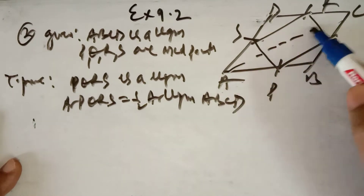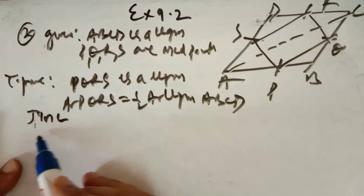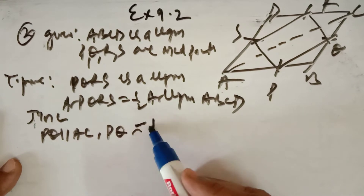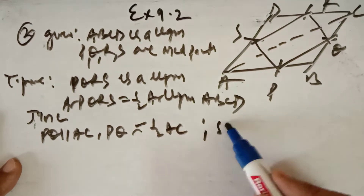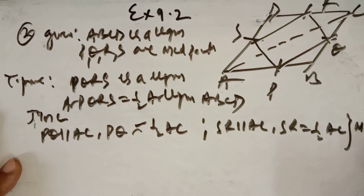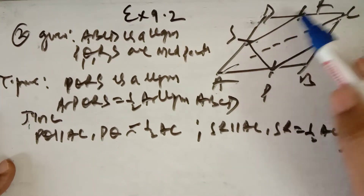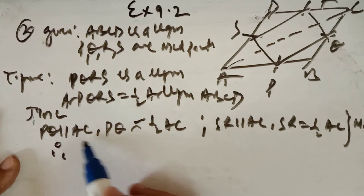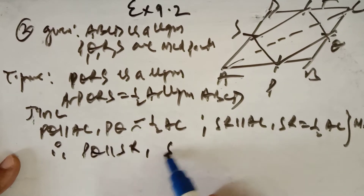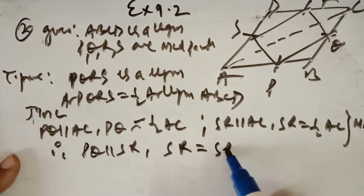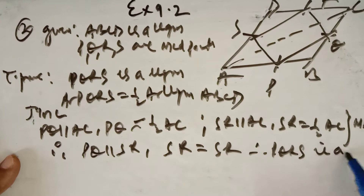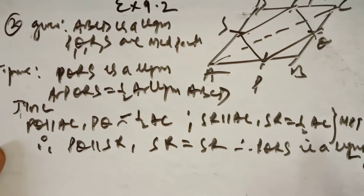To prove that PQRS is a parallelogram, join AC. By the midpoint theorem, PQ is parallel to AC and PQ is equal to half of AC. Similarly, SR is parallel to AC and SR is equal to half of AC. Therefore, PQ is parallel to SR and PQ equals SR, so PQRS is a parallelogram.